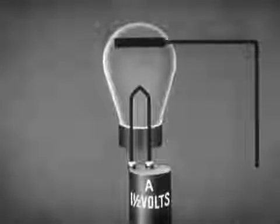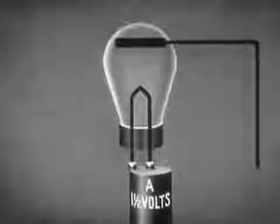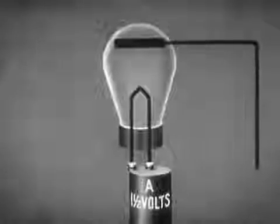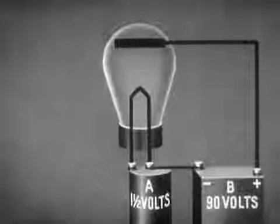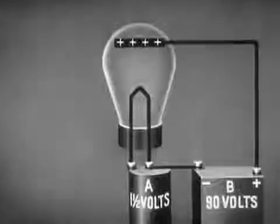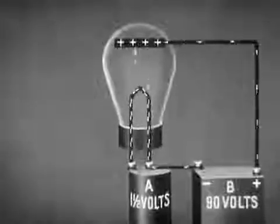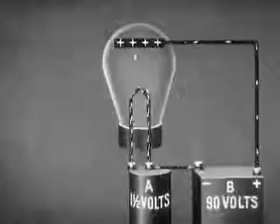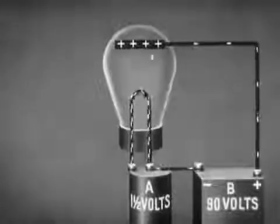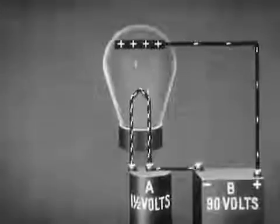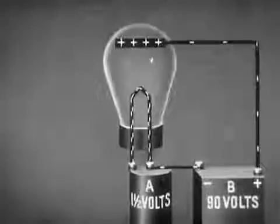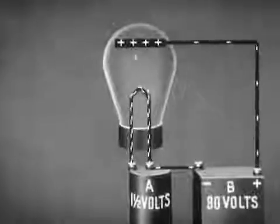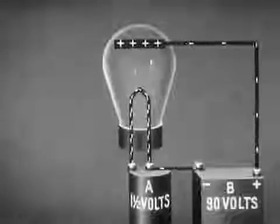Now let us add a second element called the plate. Actually, the plate is a metallic cylinder surrounding the filament. The plate is connected to the positive side of a high voltage battery. Since the plate has a positive charge with respect to the filament, electrons are attracted to the plate. A stream of electrons thus flows from the filament to the plate inside the tube, to the battery, and back to the filament. This is the plate circuit.